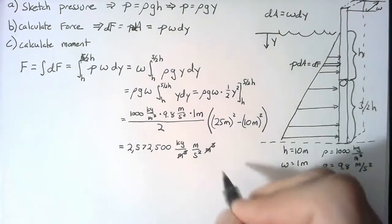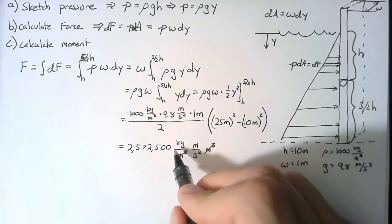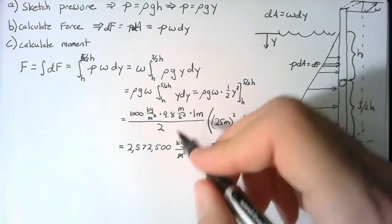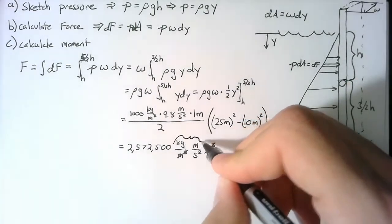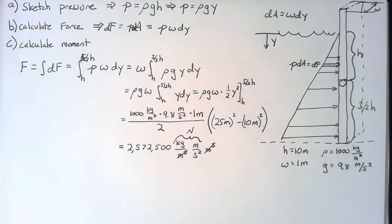Writing out the units, we get rid of the cubic meters and end up with kilogram meters per second squared, and this unit right here is exactly a newton, which is exactly what we need.